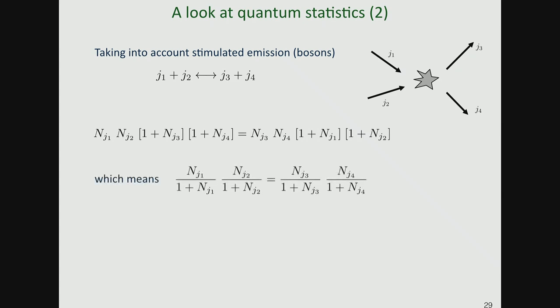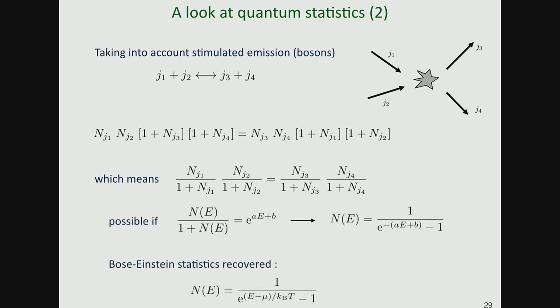Rearranging, I'm left with a function of the ratio n/(1+n) that must satisfy the same multiplicative condition as before. So n/(1+n) must be exponential of a linear function ae+b, and by simple algebra n(e) = 1/(exp(-ae+b) - 1) — nothing but Bose-Einstein statistics. So Bose-Einstein statistics follows if you understand that in a collision process bosons have not only spontaneous but also stimulated emission.